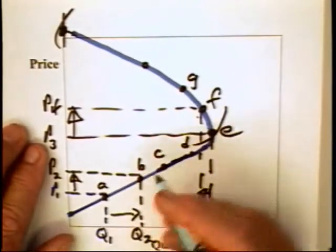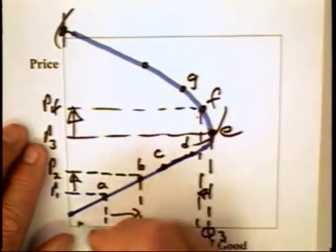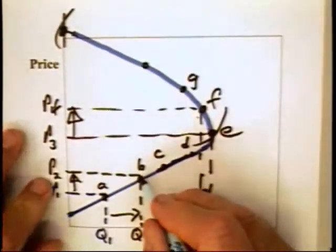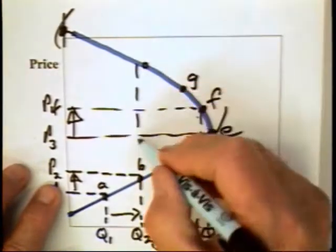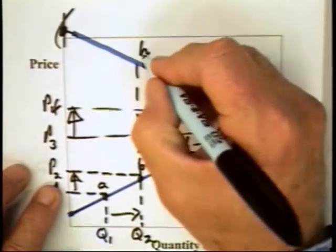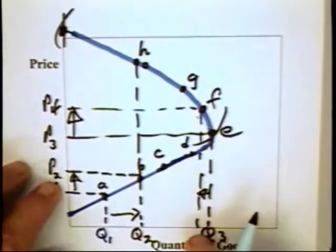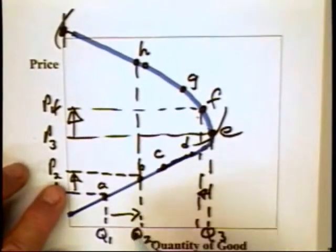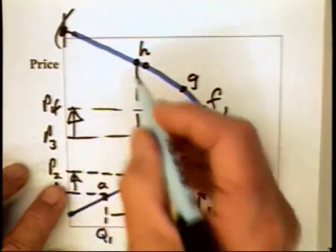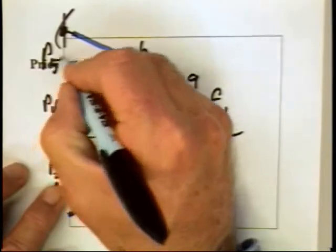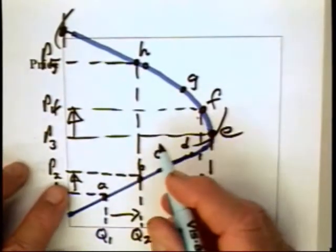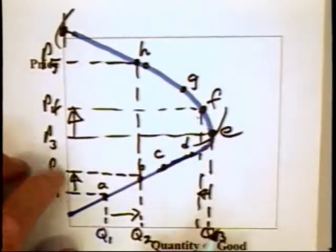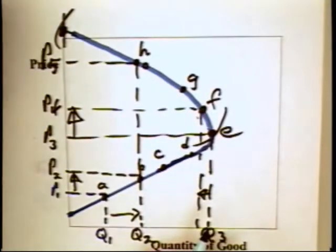Notice that if you have a demand curve that looks like this and a producer is at point B, then that producer also has the option of moving to point G. The question is, which would the producer choose to sell quantity Q2 at? Price P2 or price P5? Obviously P5 is to be preferred over P2. Again, the producer would choose a combination in the downward sloping portion of its demand curve.